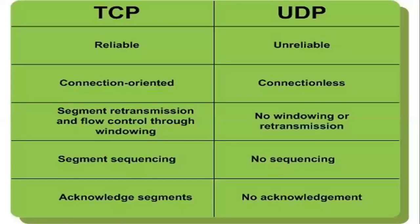TCP stands for Transmission Control Protocol; UDP stands for User Datagram Protocol. TCP is reliable, whereas UDP is unreliable. TCP is connection-oriented, whereas UDP is connectionless. TCP has segment retransmission and flow control through windowing, whereas UDP has no windowing or retransmission. TCP has segment sequencing, whereas UDP has no sequencing. In TCP, there is acknowledgement for all segments, whereas in UDP there is no acknowledgement.